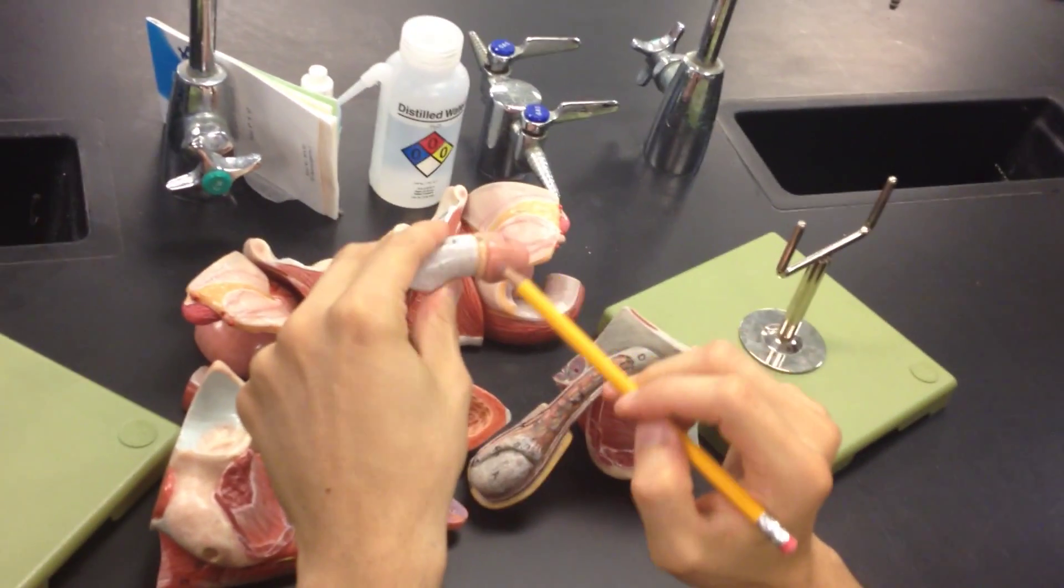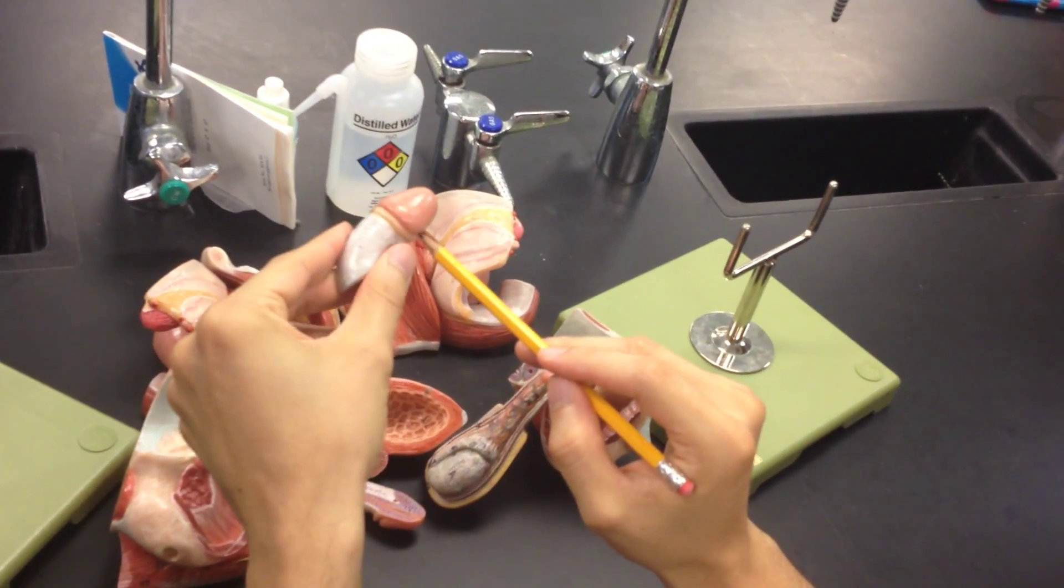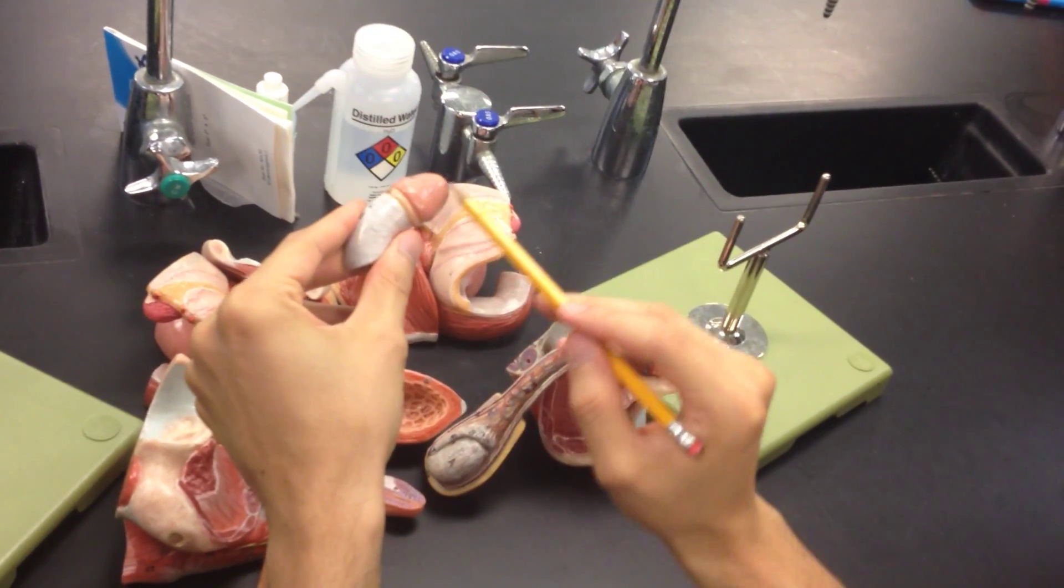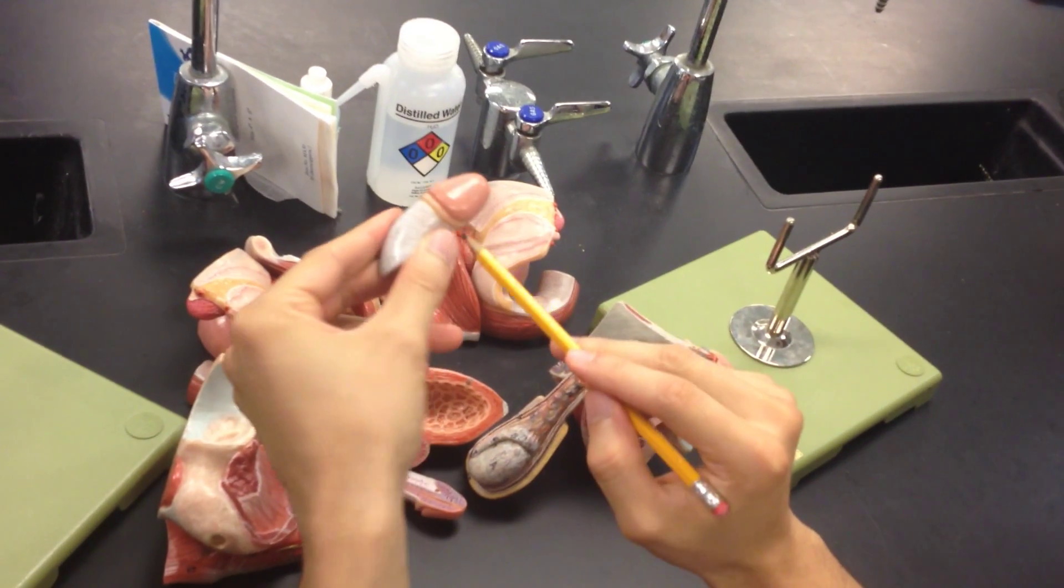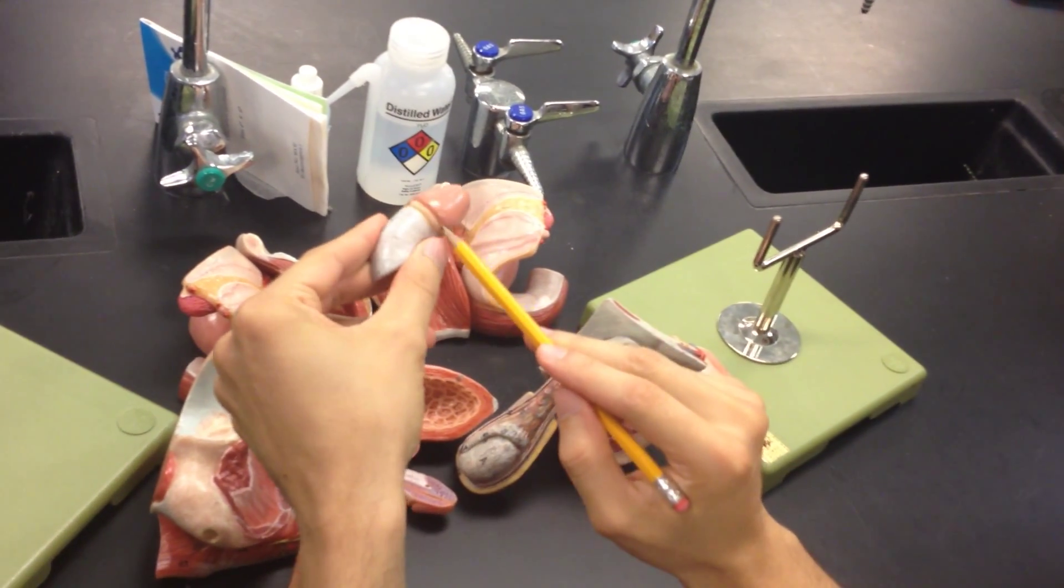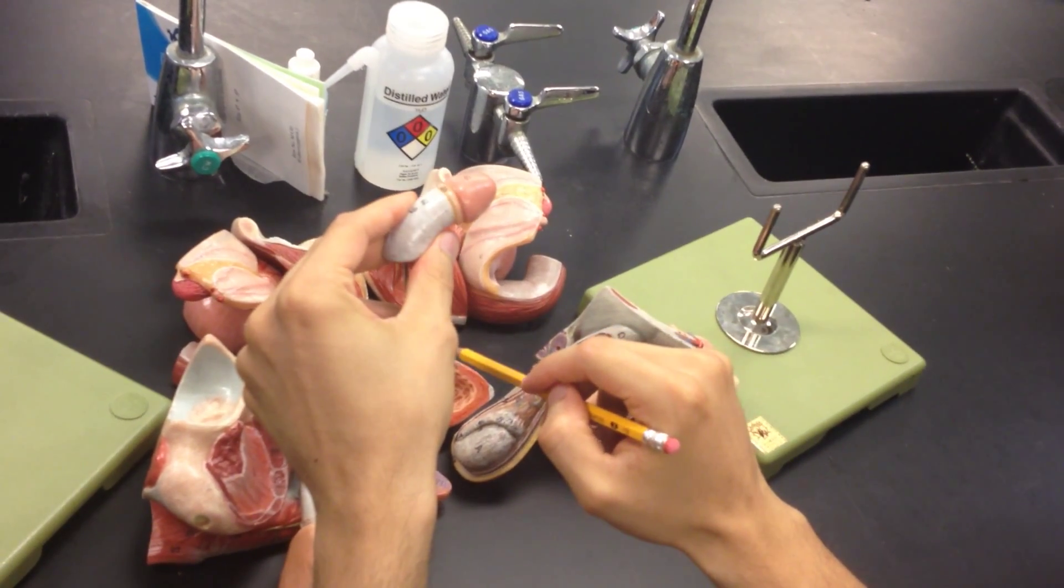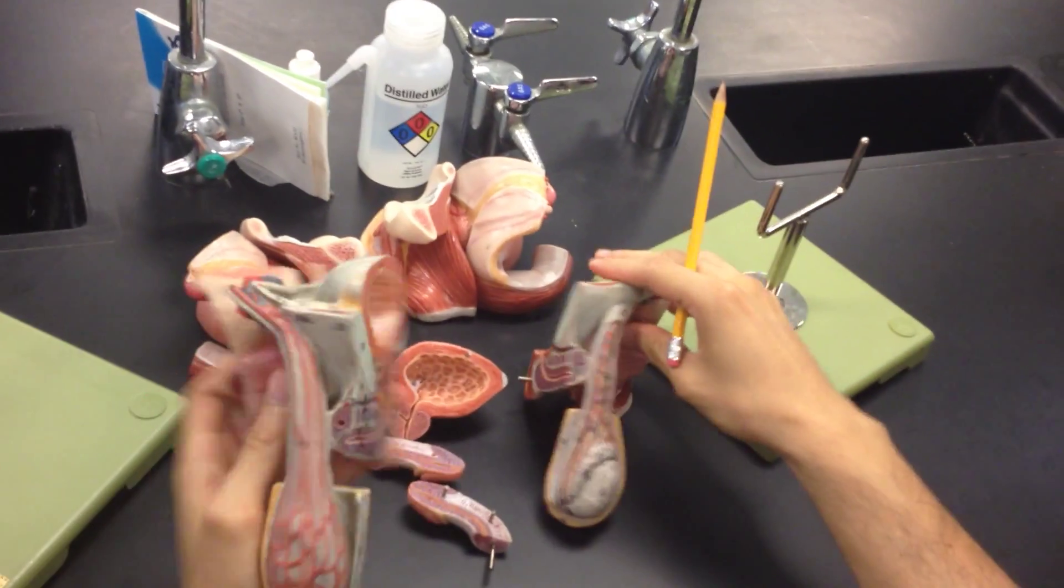That's the prepuce right there for the male. On an uncircumcised male, it would be much longer. It would actually cover the entire glans, but for this model they went more circumcised, so that's what it would actually look like. Actually, back here—thank you for asking me, I actually skipped it.